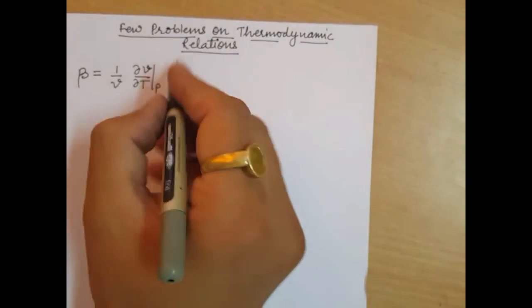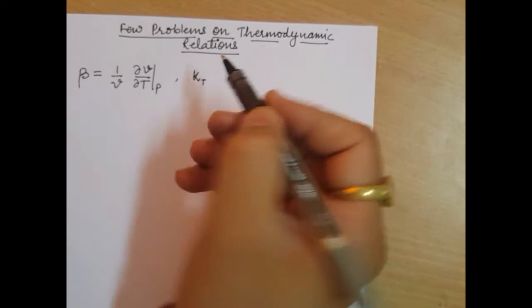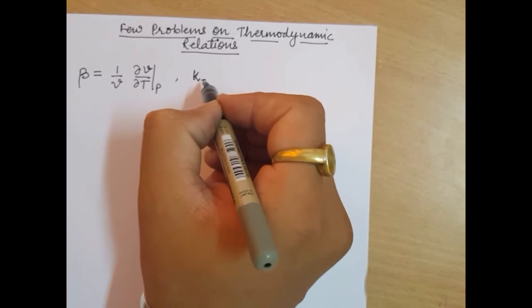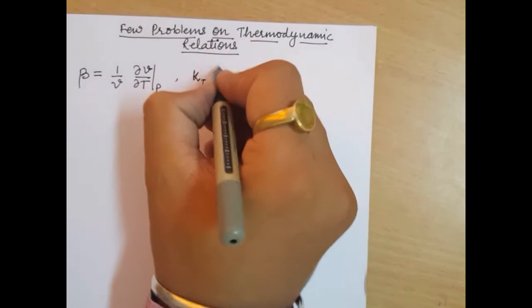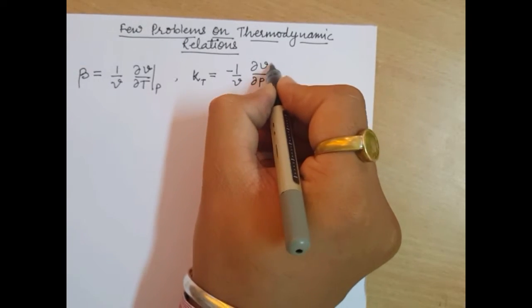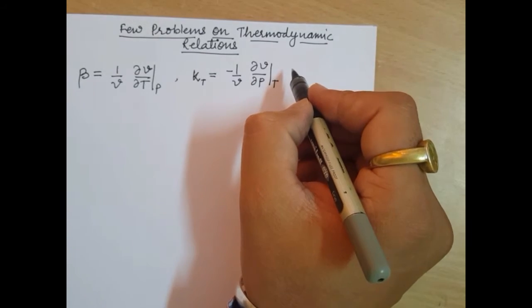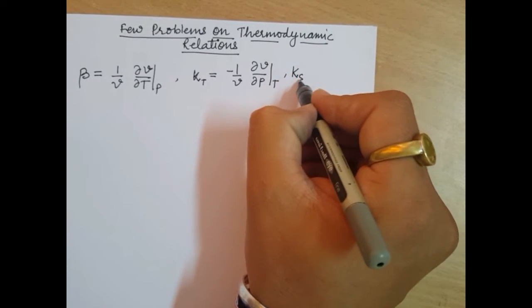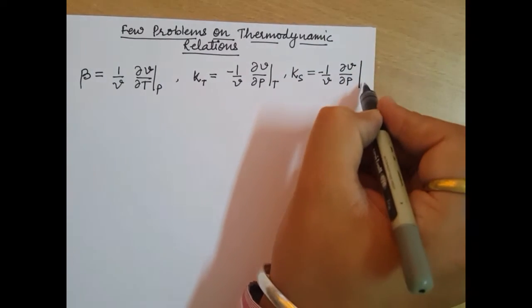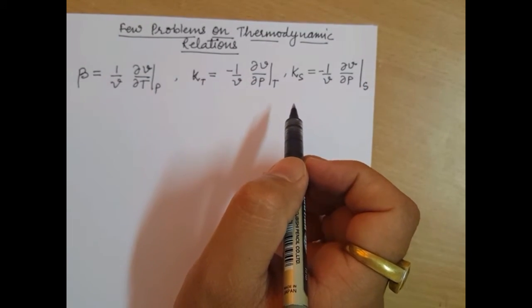The second one is isothermal compressibility. I will write KT to make it familiar as isothermal. Isothermal compressibility is minus 1 upon V, del V by del P at constant temperature. The third and final one is isentropic compressibility, which is minus 1 upon V, del V by del P at constant entropy. With the help of these, we will be solving a few problems.